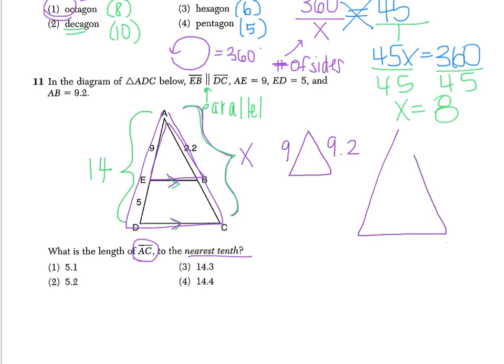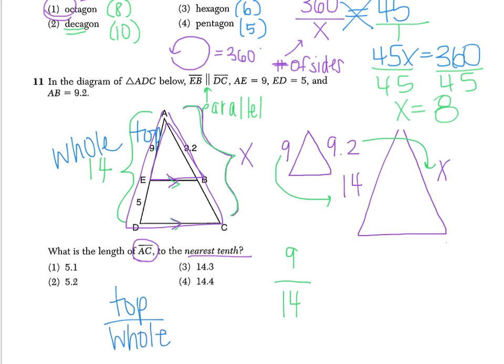And then if we focus on the big triangle, we have an X and a 14. And again, just like a previous example, if we set up a proportion with corresponding sides, we know that we can solve for the missing piece. So I'm going to take nine and put it over 14. If we had not separated the triangles, this would be like taking the top and putting it over the whole. So again, top over whole. So then on the right side, I take 9.2 and put it over X.